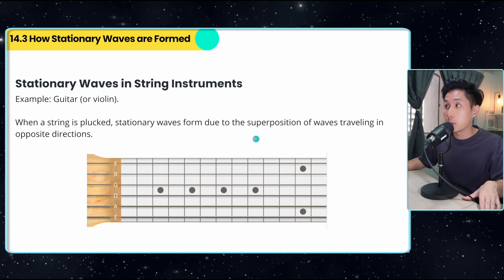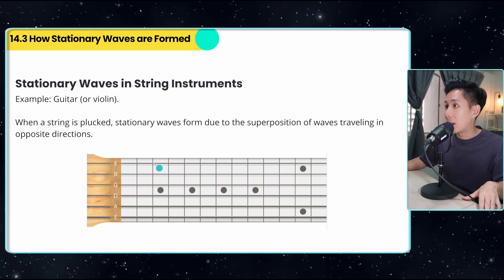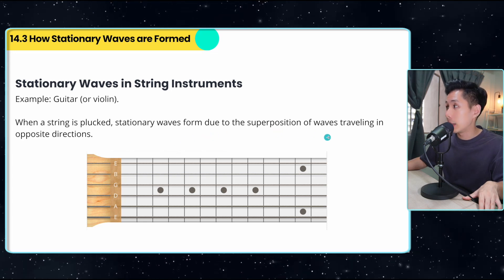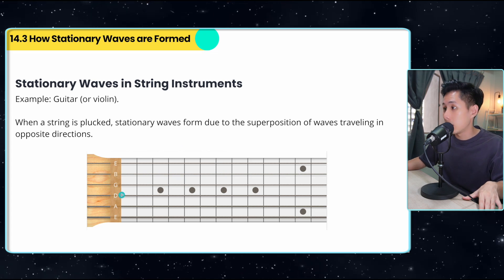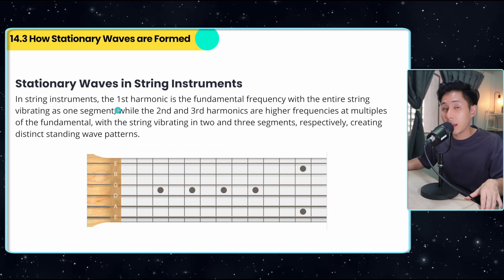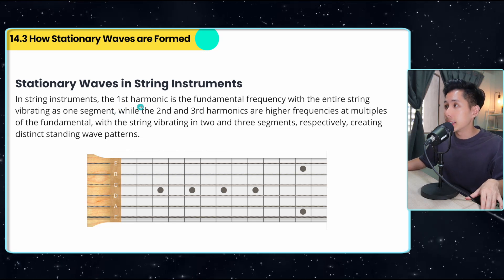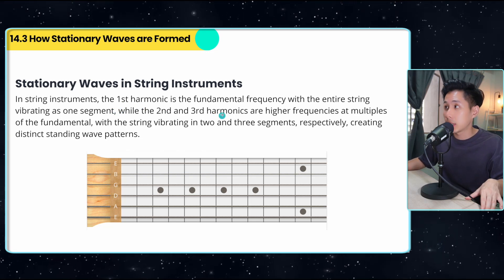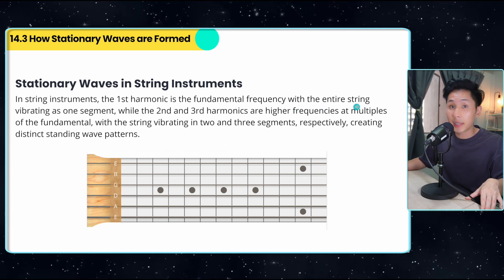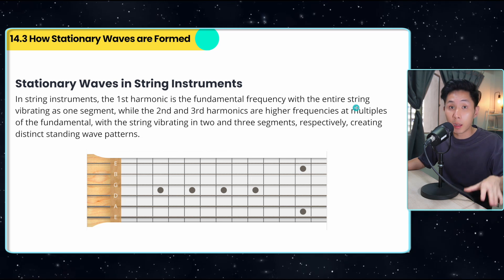All right, now let's look into stationary wave in string instrument. So when string is plucked, stationary wave form due to superposition of wave traveling in opposite direction, both from this way and also from this way. Now in string instrument, especially guitar or violin, something that you will learn is this first, second, third harmonic. So first harmonic is the fundamental frequency within the entire string. That means it's just the normal frequency. Whereas second harmonic, as we'll learn it later, is one octave higher, and third, and so on.